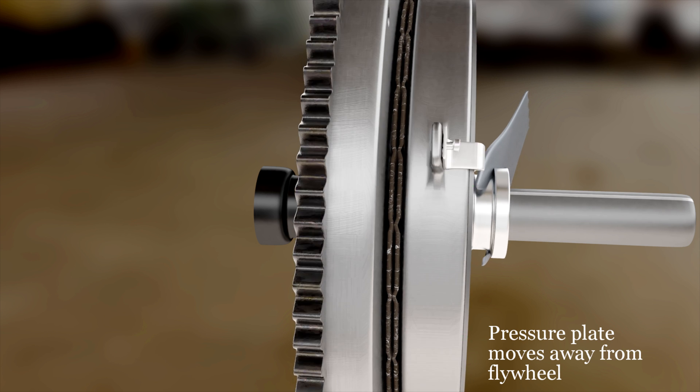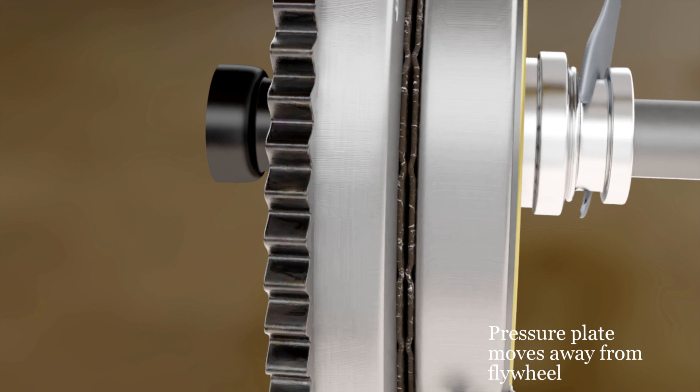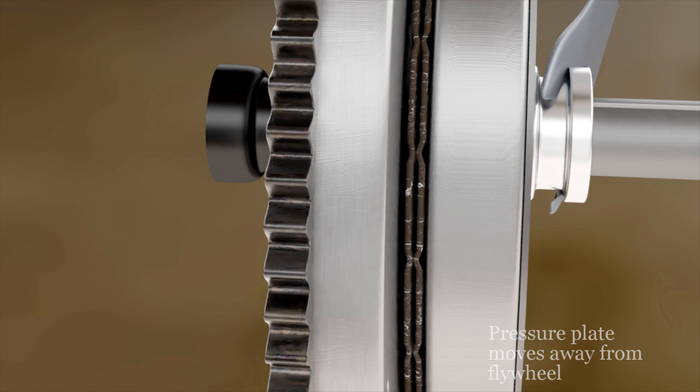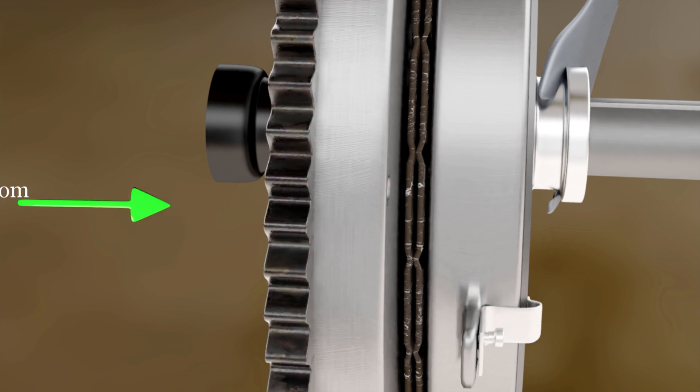Thus, pressure from the clutch plate is removed and it is separated from the flywheel, and no power is being transmitted to the clutch plate.